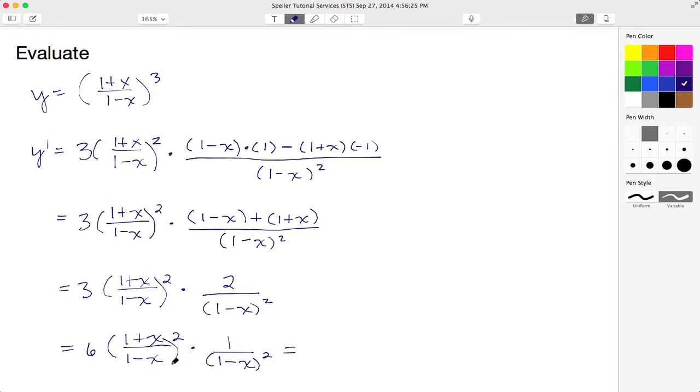At this point I see I can rewrite this left hand side into two separate fractions, but I'm going to show how it's being raised to the second power in both the numerator and denominator. So this here is really 6 times 1 plus x quantity squared over 1 minus x quantity squared, and that's multiplied by 1 over 1 minus x quantity squared.